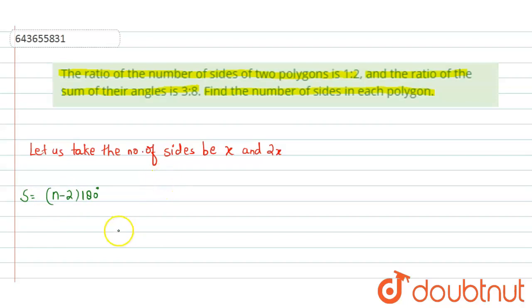So we can write S1, which is the sum of all interior angles in the first polygon where the number of sides is x. So we can write (x-2) × 180°. For the second polygon, S2 will be equal to (n-2) × 180°, but here the number of sides is 2x, so we will write (2x-2) × 180°.